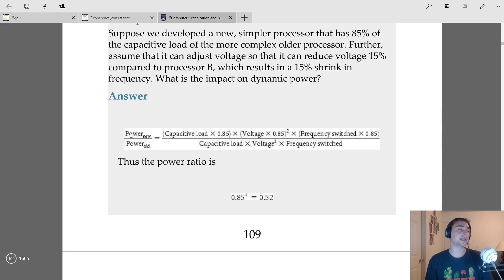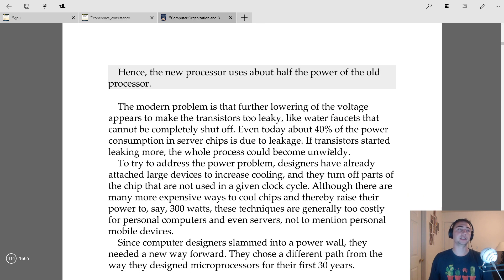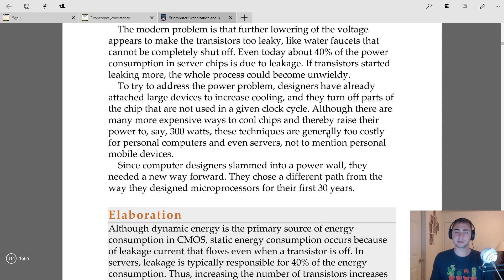Well, similar to our performance equations, we'll just put the P_new over the power old. We'll just scale this power equation, which will be the capacitive load, voltage squared, and frequency switched, but these will all be scaled by 0.85. A simplification we can do is that all of these things, capacitive load and such, will end up canceling out, and so what we'll be left with is 0.85 times 0.85 squared times 0.85, which just gives us 0.85 to the fourth—a little hard to read that there—which is roughly equal to 0.52. So if we're able to scale each of these things by about 15 percent, we end up getting this power ratio of new over old being about half. So the new processor is only going to use about half the power of the old processor.